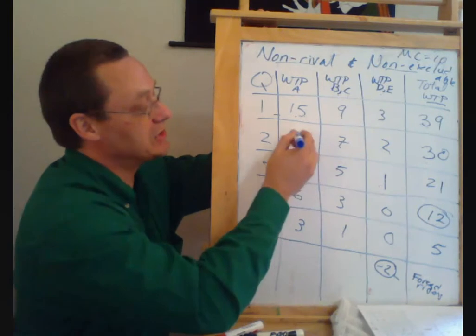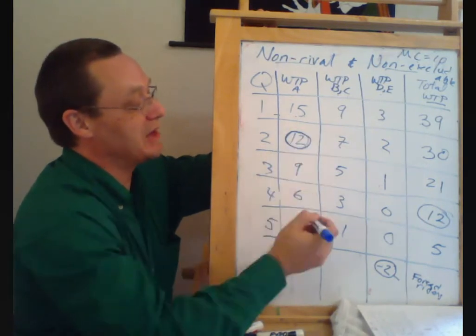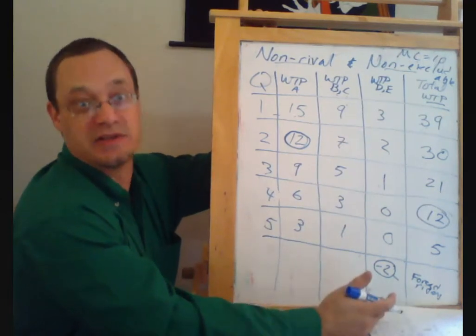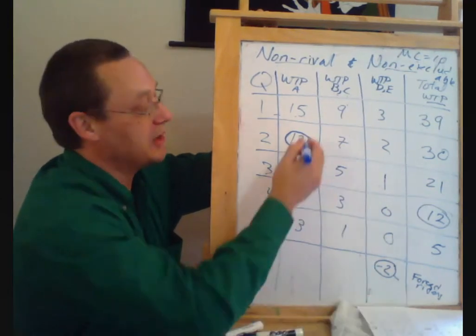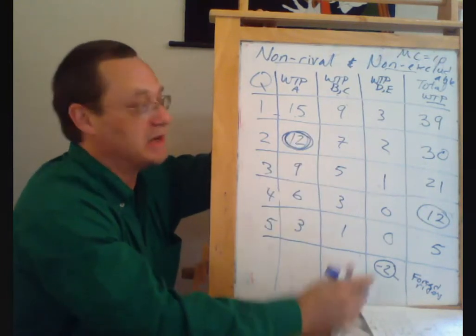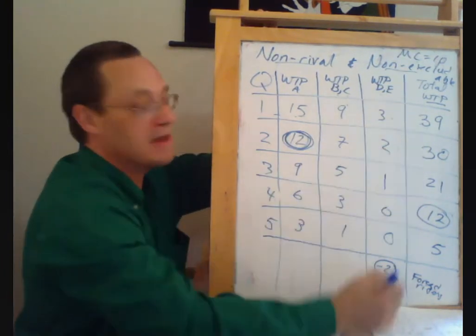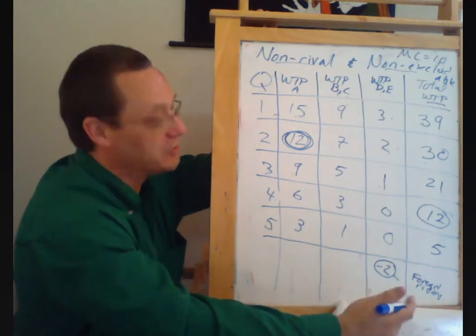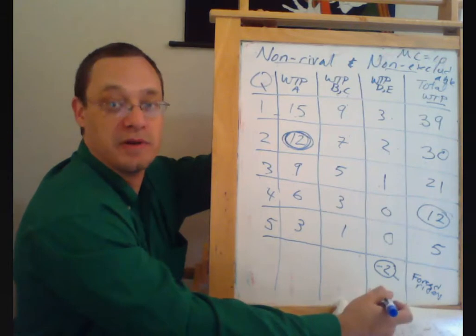If person A demands two street lights, then persons B and C get $16 worth of benefits and don't have to pay anything. They're getting a free ride, hitching a ride, on person A's expenditure. And persons D and E got $5 of benefits without putting any contribution in. So they were also free riding.